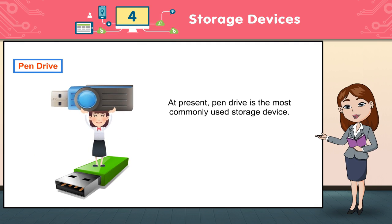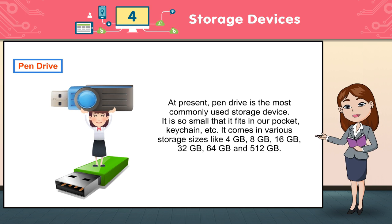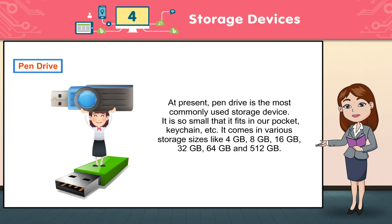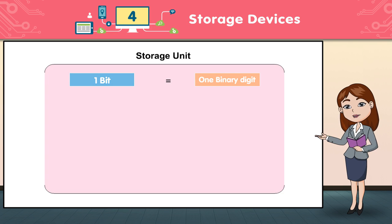Pen Drive. A pen drive is the most commonly used storage device. It is so small that it fits in our pocket, keychain, etc. It comes in various storage sizes like 4 GB, 8 GB, 16 GB, 32 GB, 64 GB, and 512 GB.